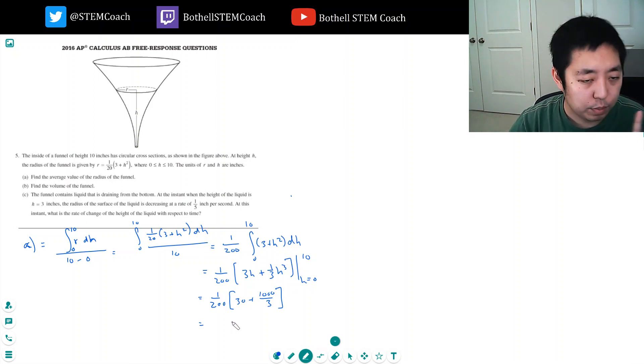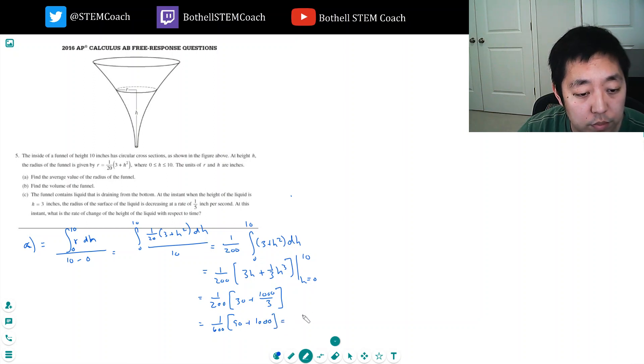Sorry I'm getting over a cold so I'm trying to avoid coughing here. What do I do? I'm going to make this over 600. 90 plus a thousand. 1090 over 600.